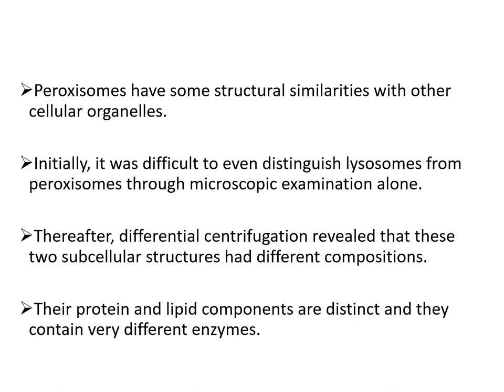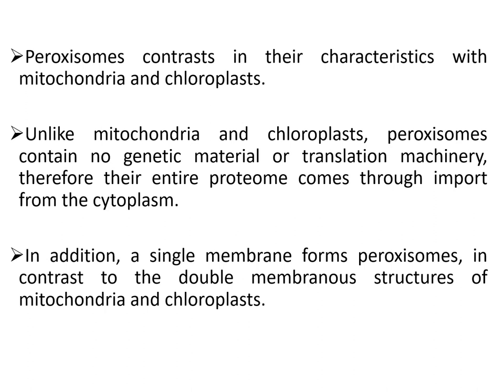Peroxisomes have some special similarities with other cell organelles. Initially it was difficult to distinguish lysosomes from peroxisomes through microscopic examination alone; differential centrifugation later revealed that these two subcellular structures have different compositions in their protein and lipid components and contain very different enzymes. Unlike mitochondria and chloroplasts, peroxisomes contain no genetic material or translation machinery — therefore their entire proteome comes through import from the cytoplasm. Additionally, a single membrane forms peroxisomes, in contrast to the double-membrane structure of mitochondria and chloroplasts.